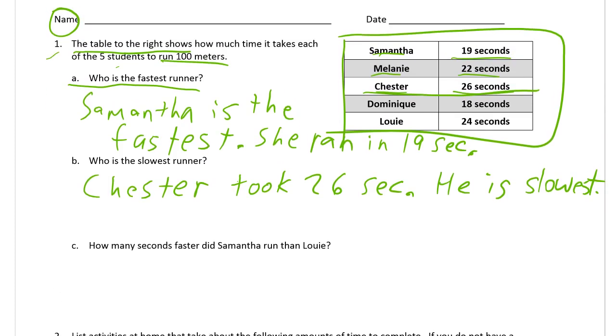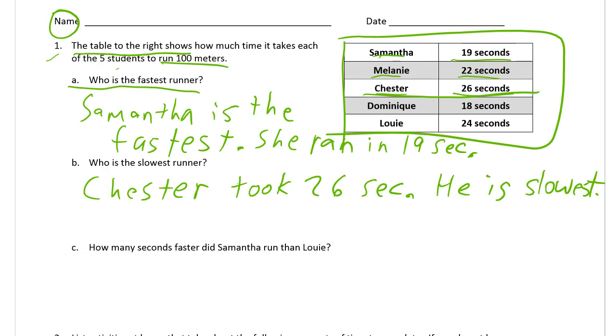How many seconds faster did Samantha run than Louie? Samantha is faster. This kind of thinking is going to be different because everything's backwards—less is better when you're talking about speed. Samantha's not going to have more time, she's going to have less. Louie had 24 seconds, and this is going to be Samantha. We're talking about seconds here.